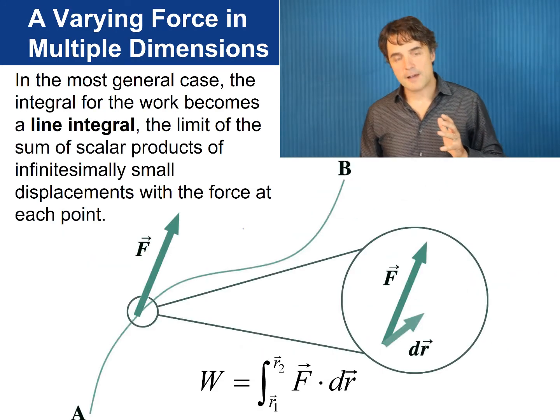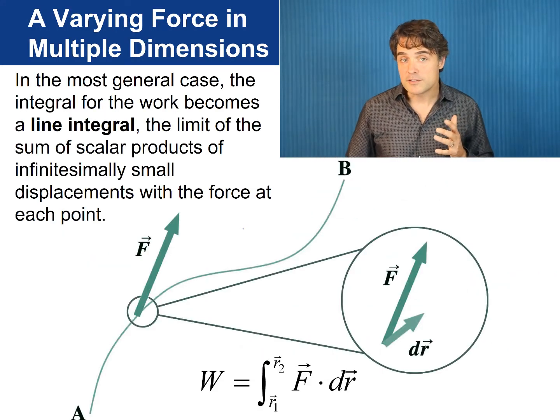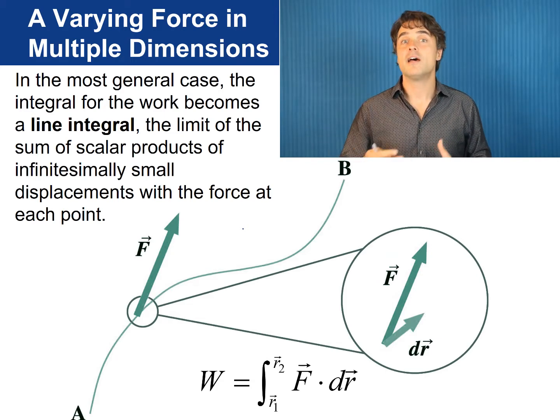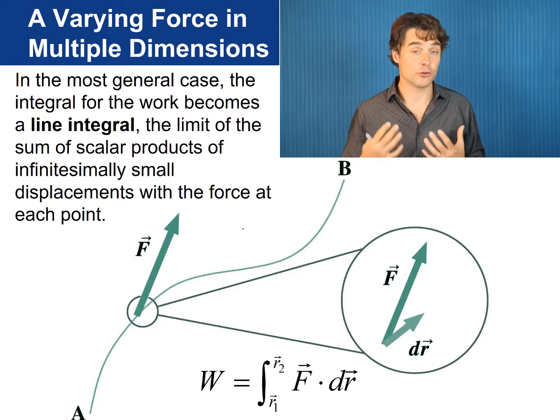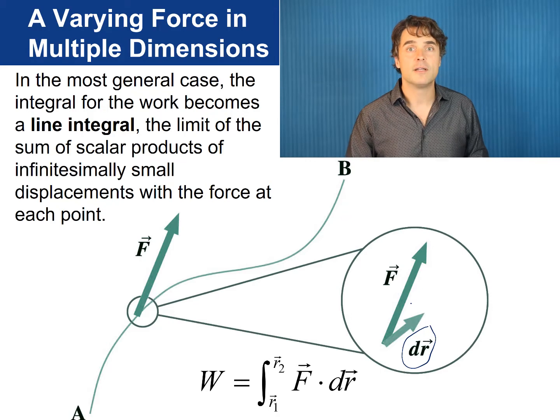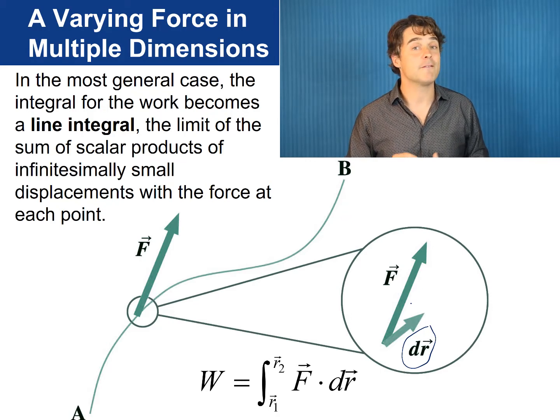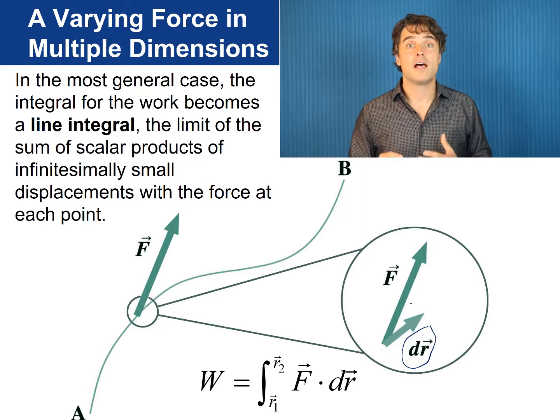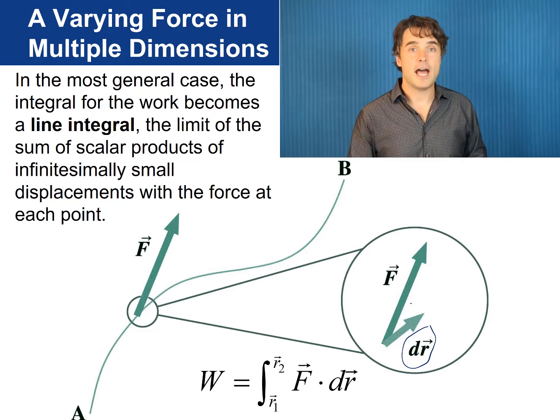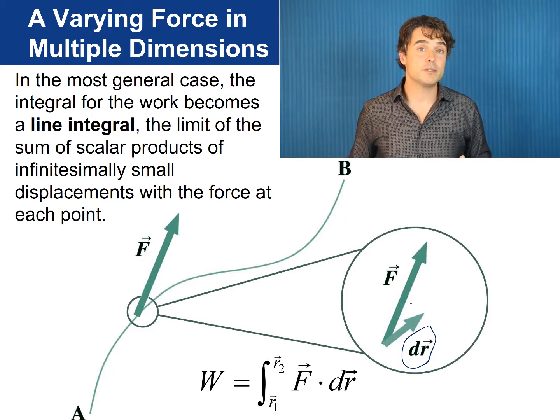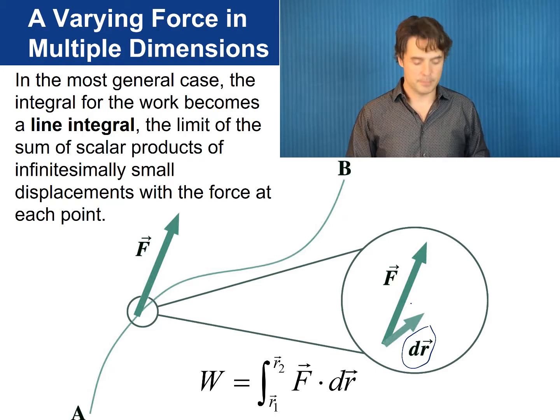Now if we have multiple dimensions like if you're going along a path from point A to point B, the integral for the work becomes a line integral where we define this little differential displacement dr as being a vector. So for every little step you take the scalar product of f dot dr and you integrate from our initial position A to our final position B.